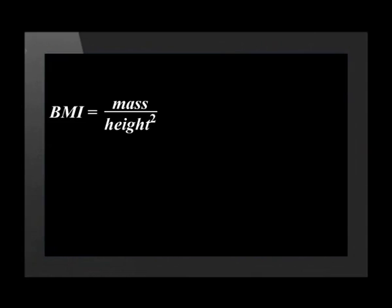If we look at people, we can sometimes make a judgment on whether we think they are healthy or not. To calculate the body mass index of an individual, we need to know their mass in kilograms and their height in meters. The formula for body mass index is mass divided by height squared.